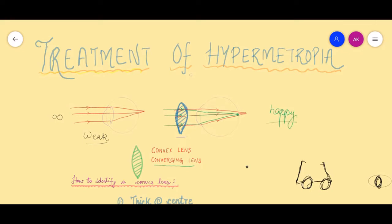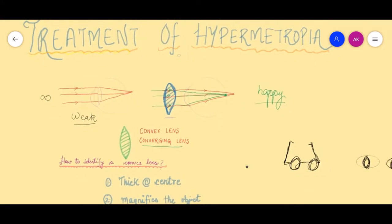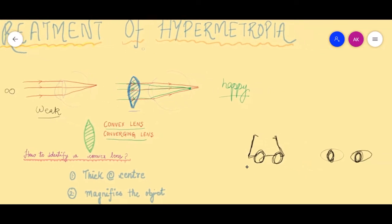If someone asks what is the treatment of hypermetropia, the answer is convex lenses or converging lenses. We can prescribe these convex lenses either in the form of spectacles or as contact lenses.